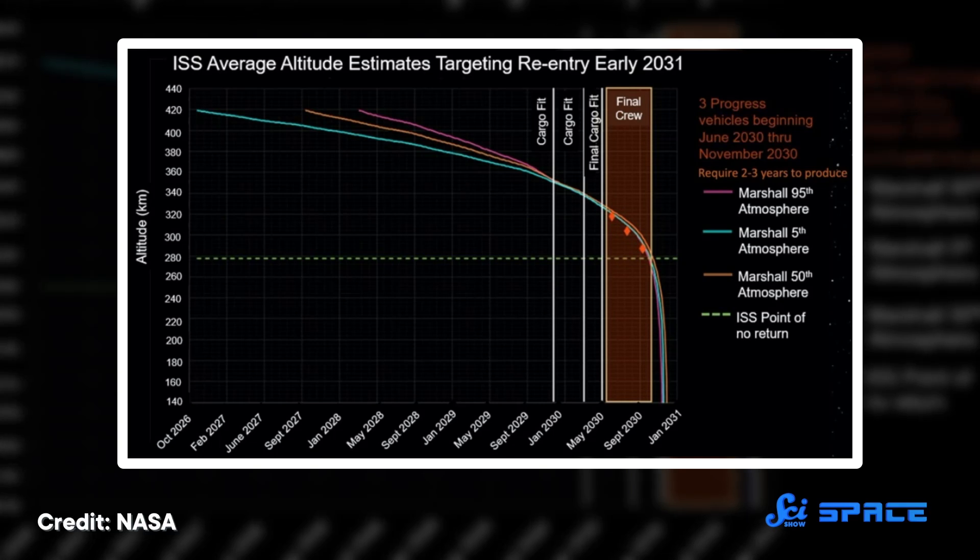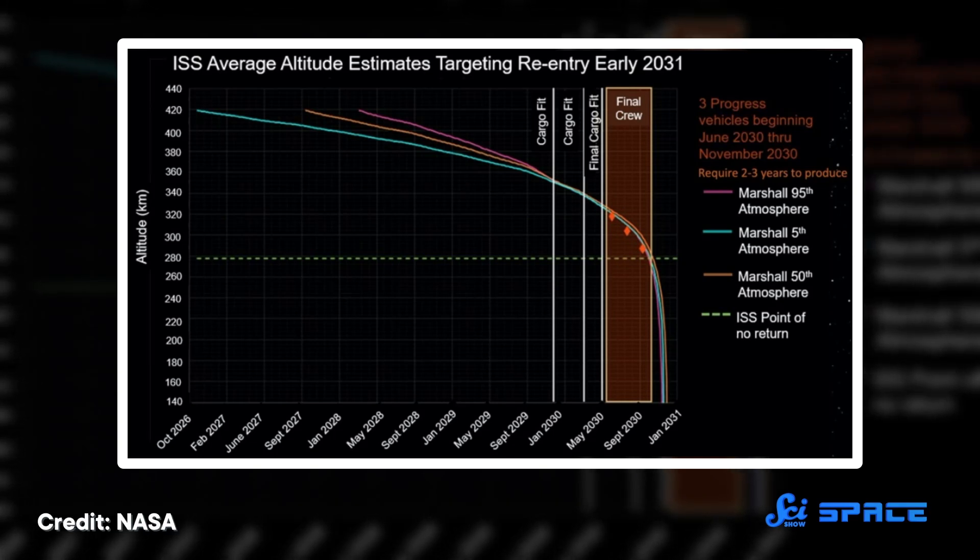Now, it'll take a little extra oomph to push the ISS down past the point of no return, which will be provided by docking a few extra thrusters to the station. The last missions will bring home the remaining science experiments and, of course, the crew, before the ISS plunges on a collision course with Point Nemo.